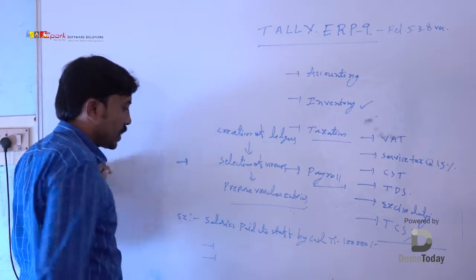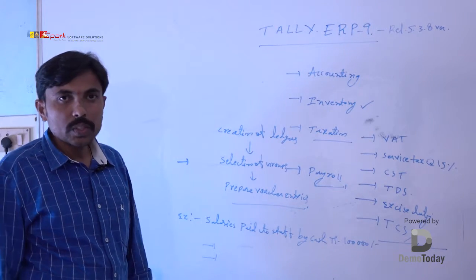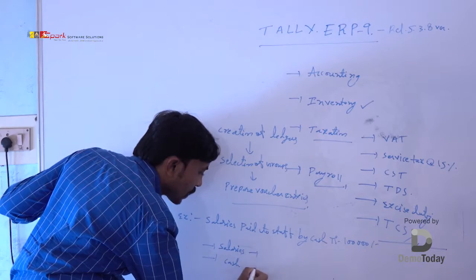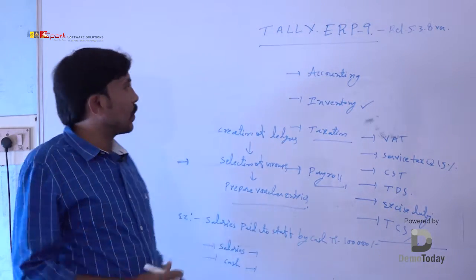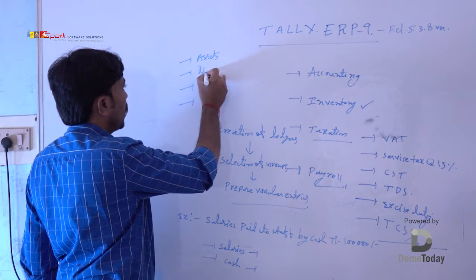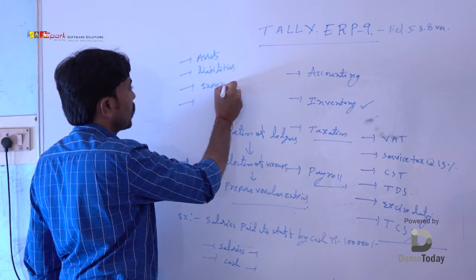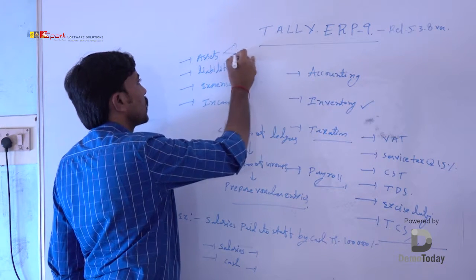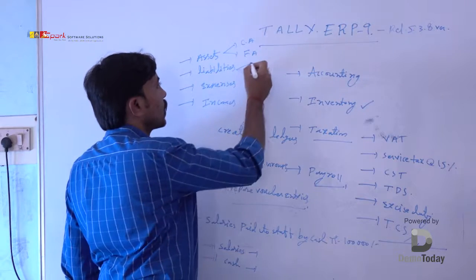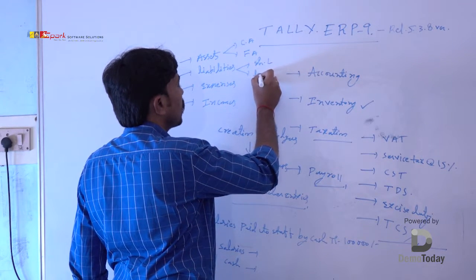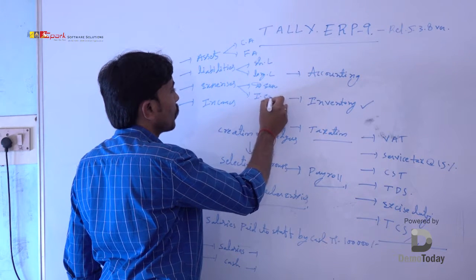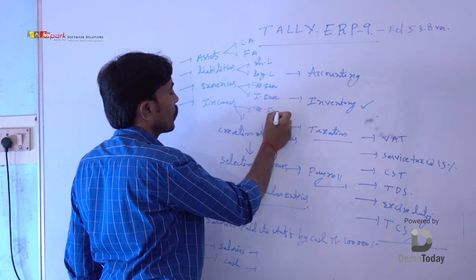First, create the ledgers. The entry in manual accounting is: Salaries account debit to Cash account. So here, salary is one ledger and cash is another. Each ledger belongs to one group. In manual accounting, there are mainly four groups: Assets, Liabilities, Expenses, and Incomes. Assets are divided into current assets and fixed assets. Liabilities are short-term and long-term. Expenses are direct and indirect. Incomes are direct and indirect.